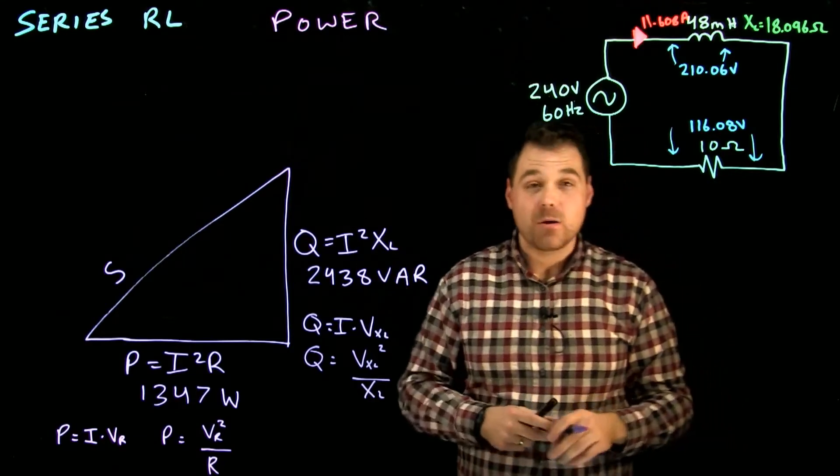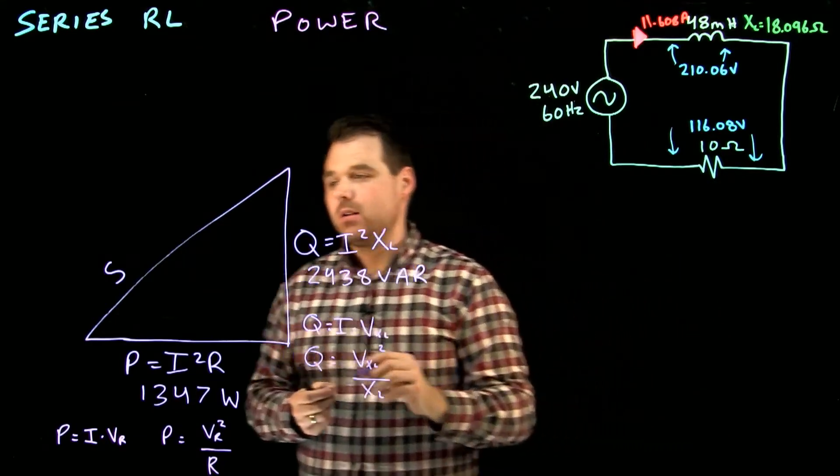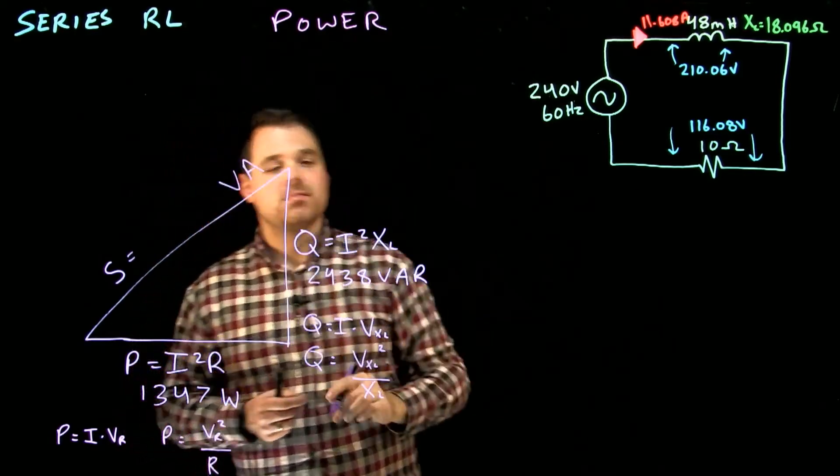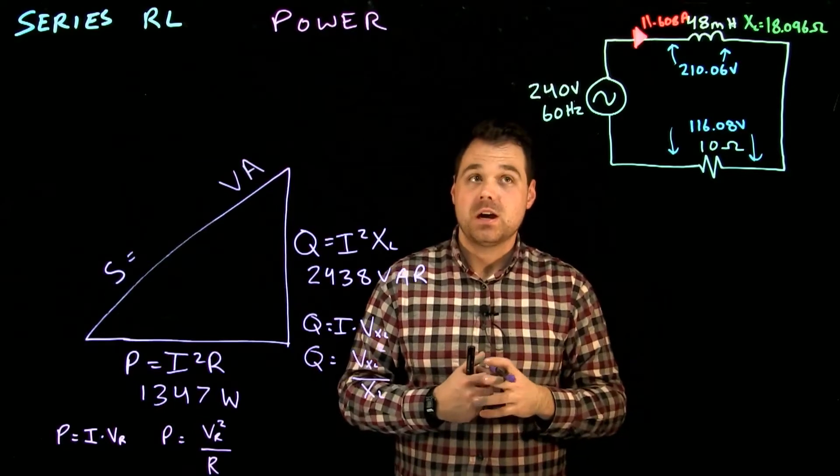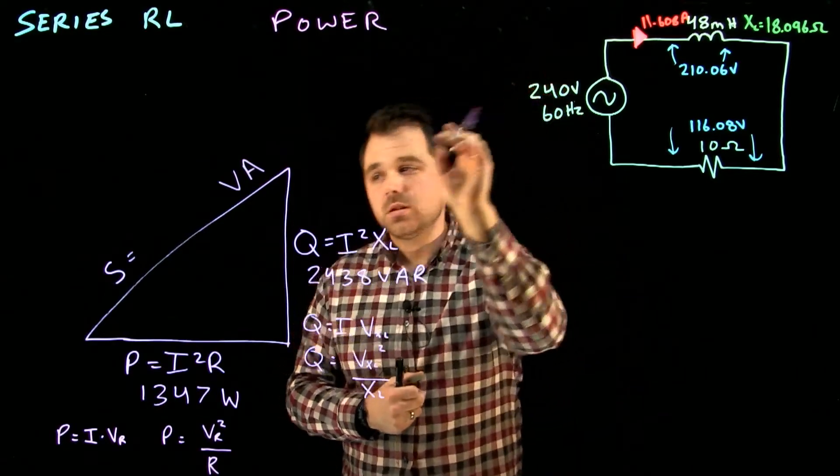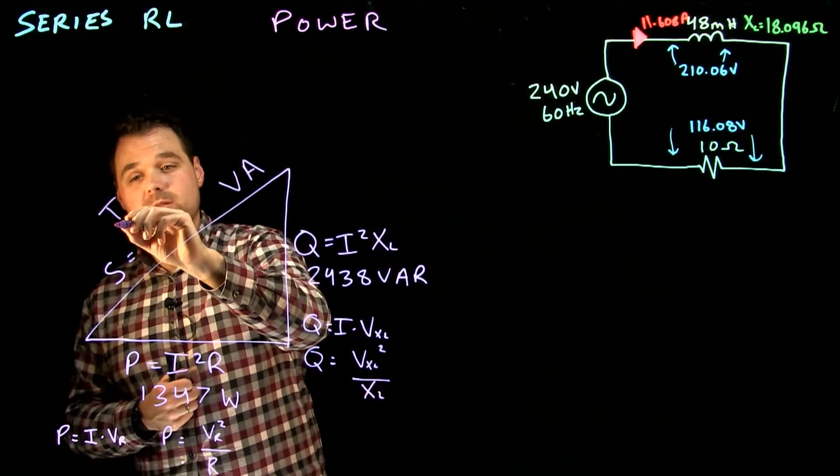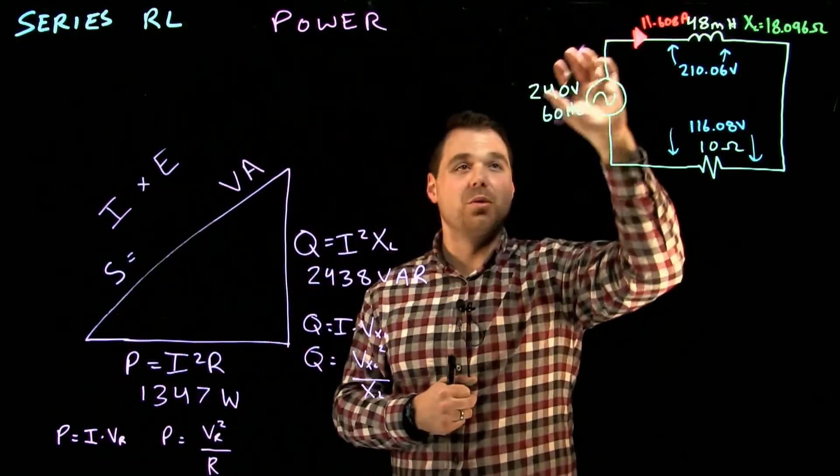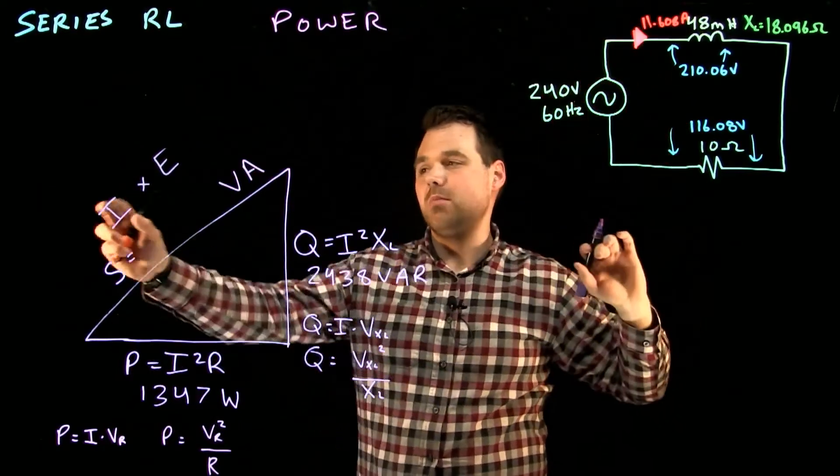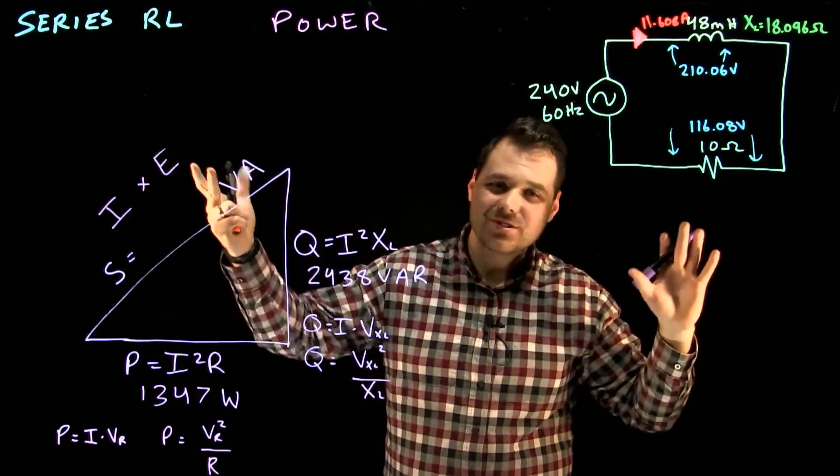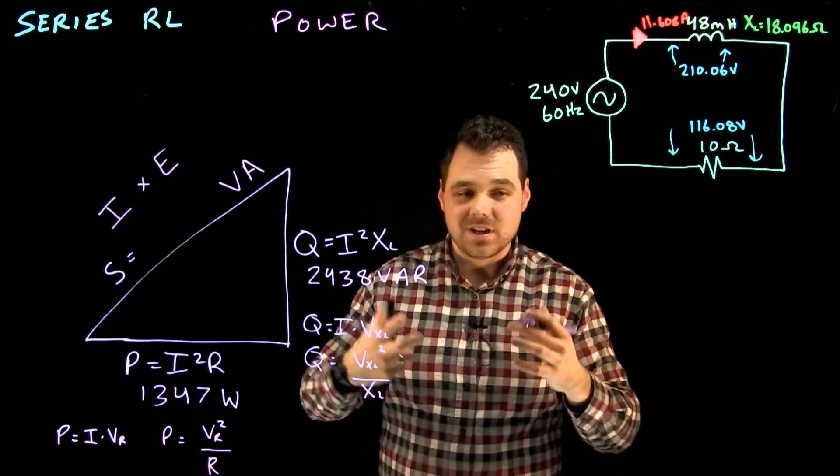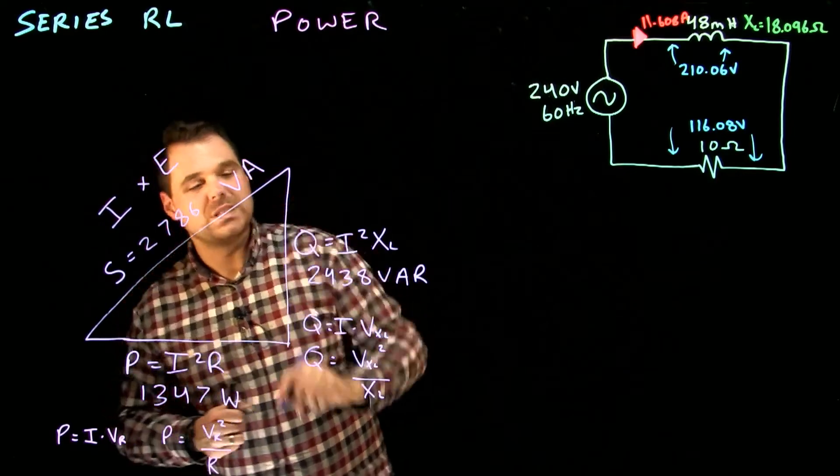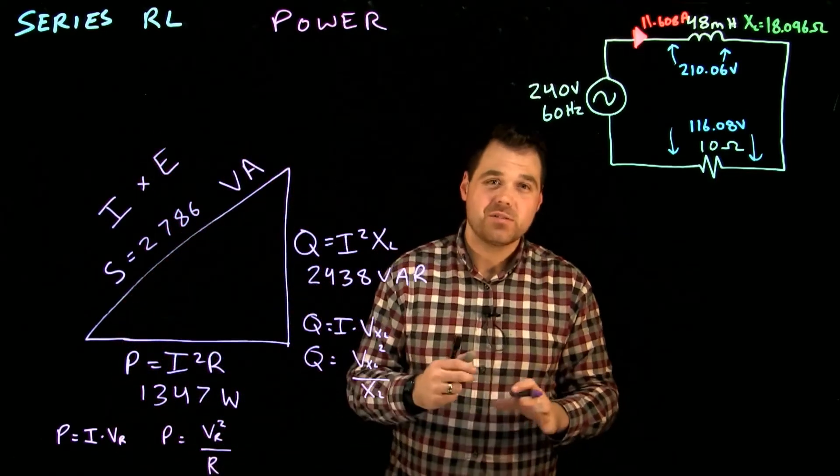Then what I want to do is my apparent power. Now apparent power is volt amps. That's what they are measured in and that's what I like to think of them as. I like to take my total volts times my total current and multiply them together. I would be current. E would be voltage. Same thing. I times E. In this case I get 2786 volt amps or close to it. So it could be rounding a little bit in a couple places.